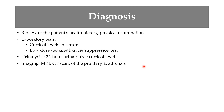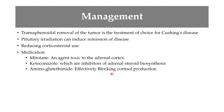Diagnosis involves history taking and physical examination, confirmed by laboratory tests including serum cortisol levels and the dexamethasone suppression test — administering a low dose of dexamethasone, a synthetic glucocorticoid, to see whether cortisol production is suppressed. Urinalysis including 24-hour urine free cortisol levels is also checked. Imaging such as MRI and CT scan is used to examine the pituitary and adrenals for hypertrophy or tumors.